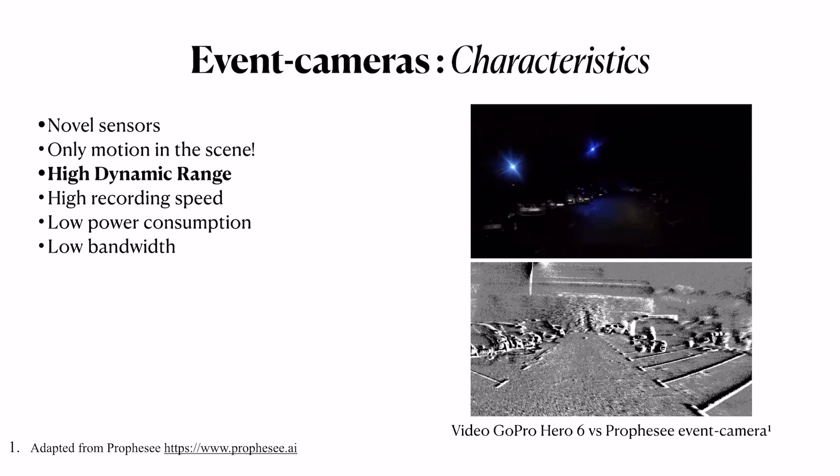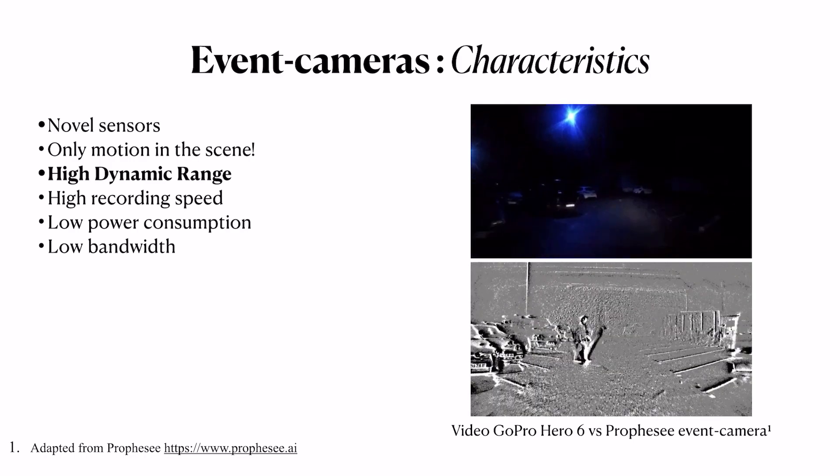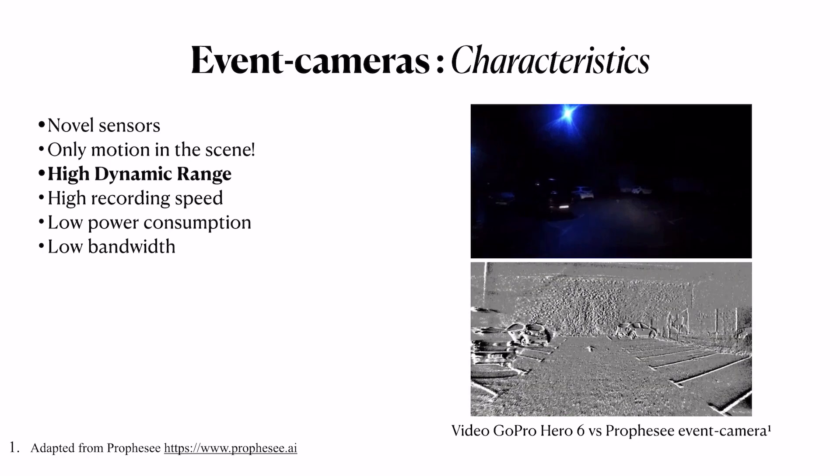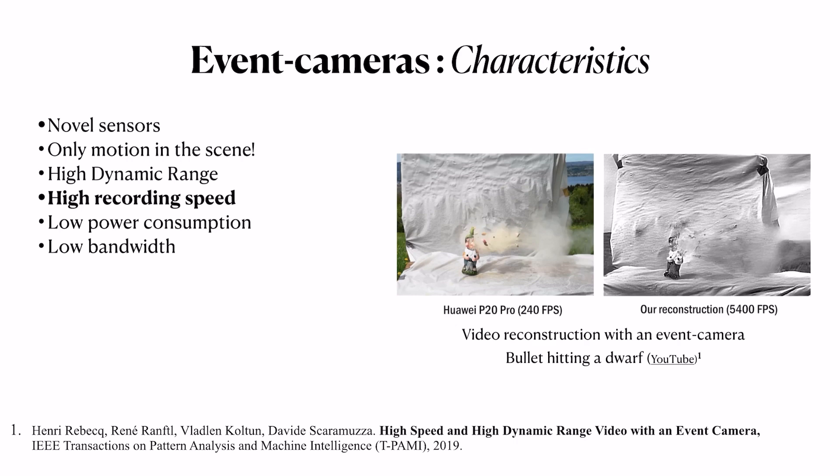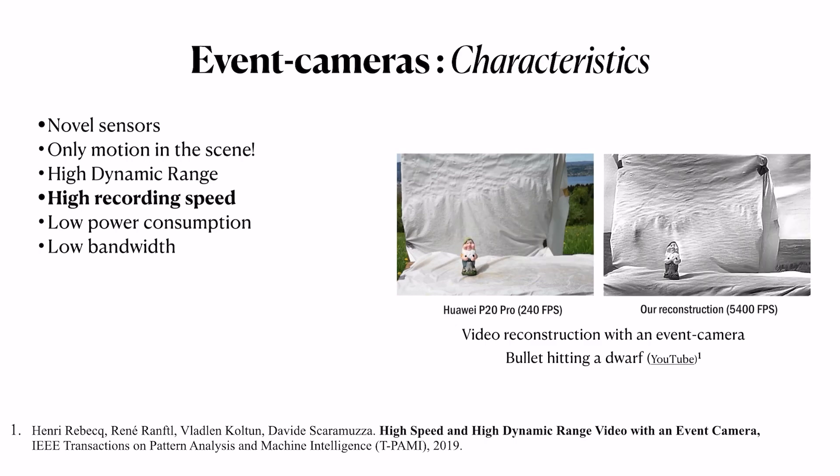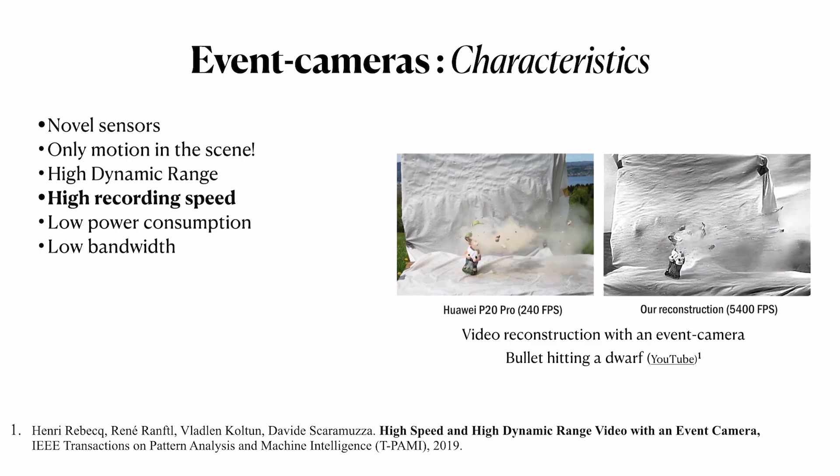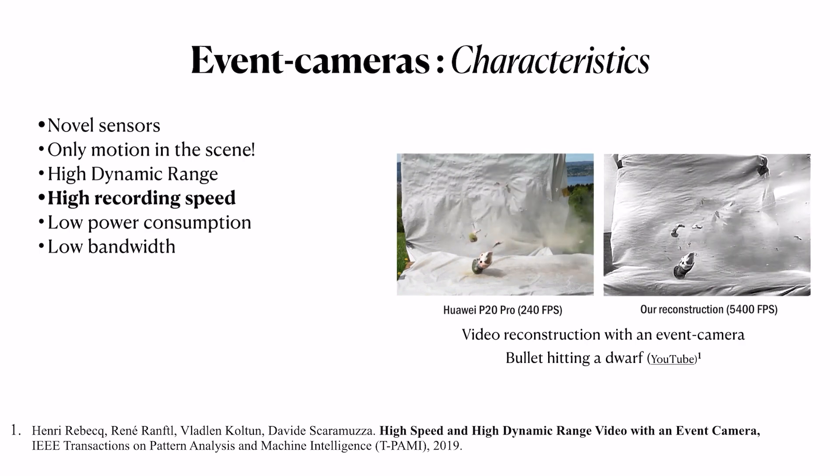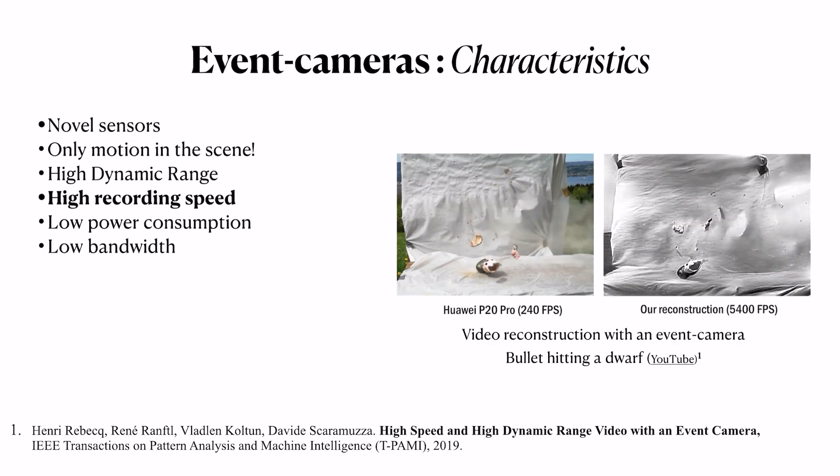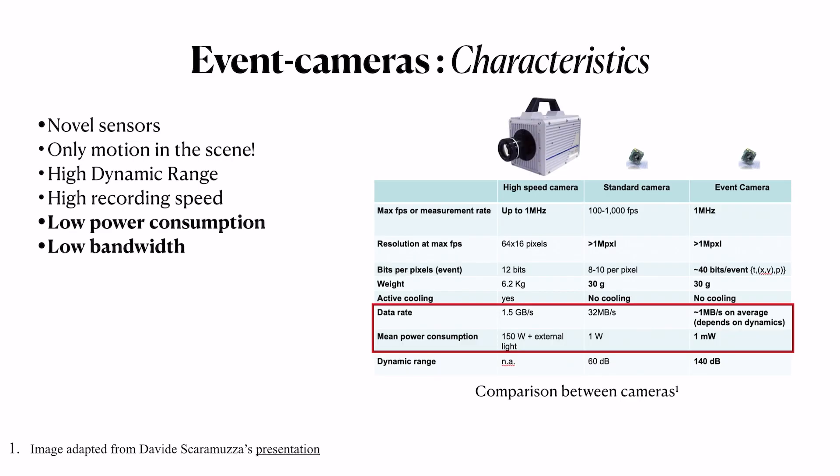For example, I can show here a comparison between GoPro Hero 6 and a Prophesee event camera at night. You can see the much more details of event cameras and of their reconstruction accumulation of events. They also have an interesting property because of their high recording speed. We can compare, for example, the Huawei P20 Pro at 200 frames per second and the comparison with a reconstruction made by a neural network of raw events to produce intensity frames up to 5000 frames per second. This is made by Rebecq and colleagues from the University of Zurich. You can see the bullet shot at the dart and all the details of the explosion. Event cameras are also low power consumption and low bandwidth, so they have really interesting properties for real-time applications and robotics applications.